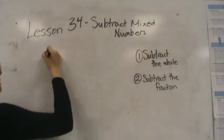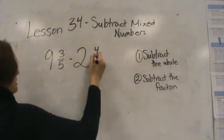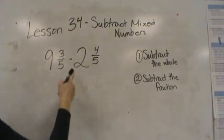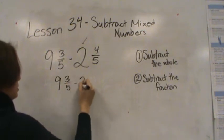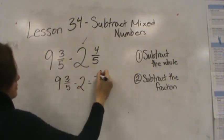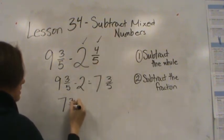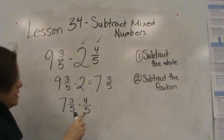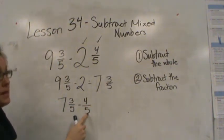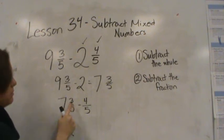Let's try another one: 9 and 3/5 minus 2 and 4/5. I'm going to subtract the whole first: 9 and 3/5 minus 2 equals 7 and 3/5. Now I'm going to take away the 4/5: 7 and 3/5 minus 4/5, subtracting the fractions. I know I'm going to have to regroup because I have more pieces being taken away than I have, so I'm going to have to regroup this 7 to make more fifths.